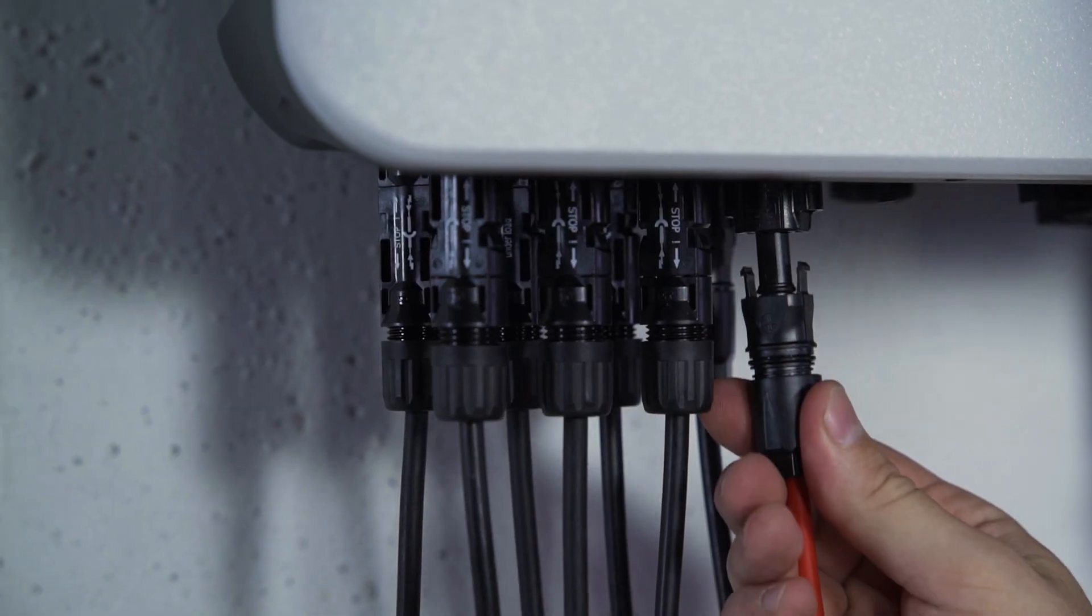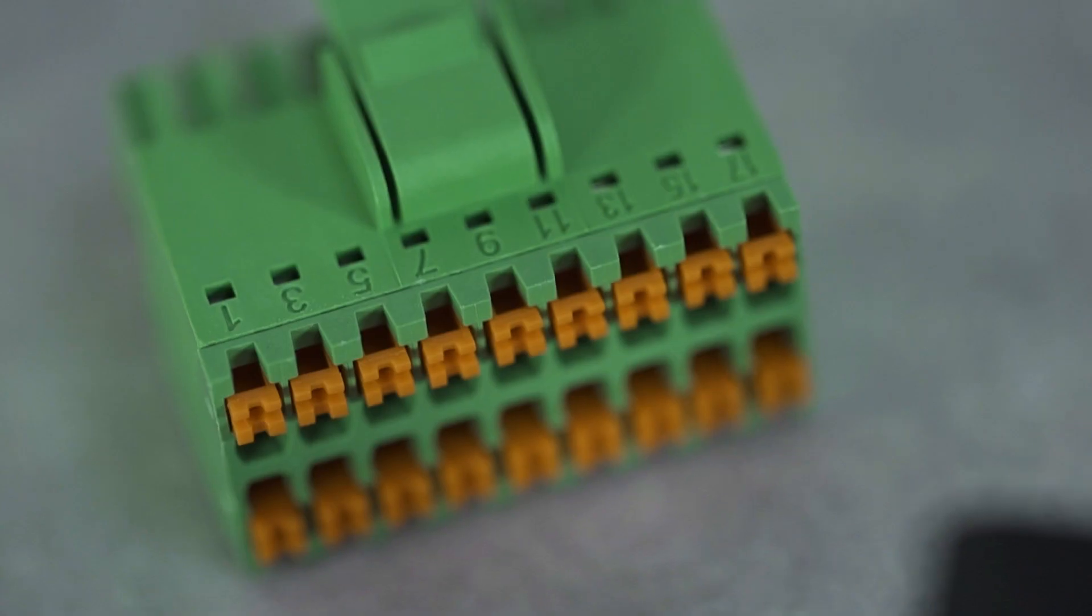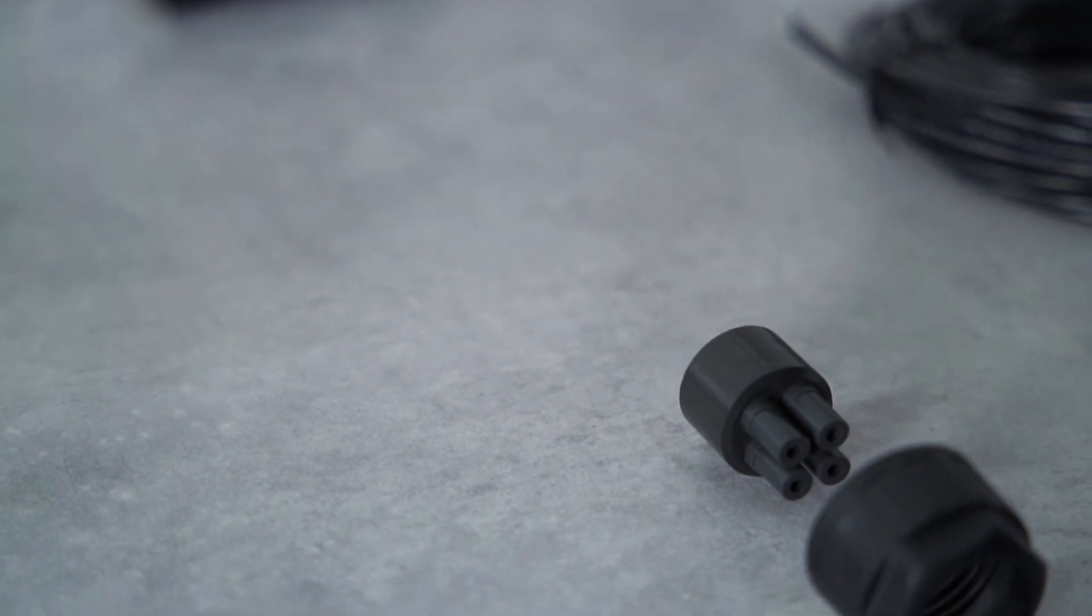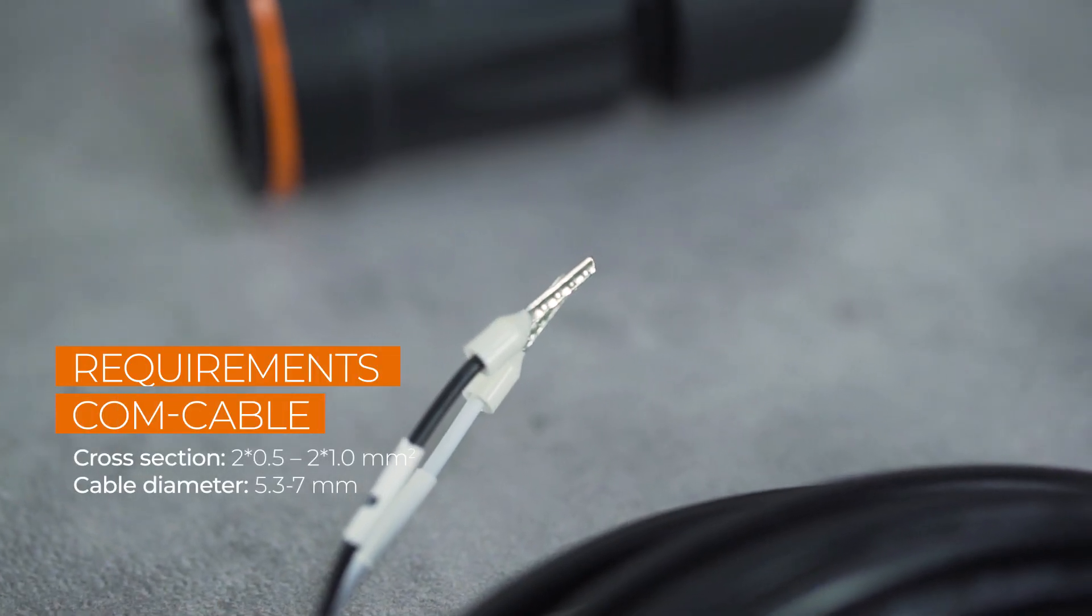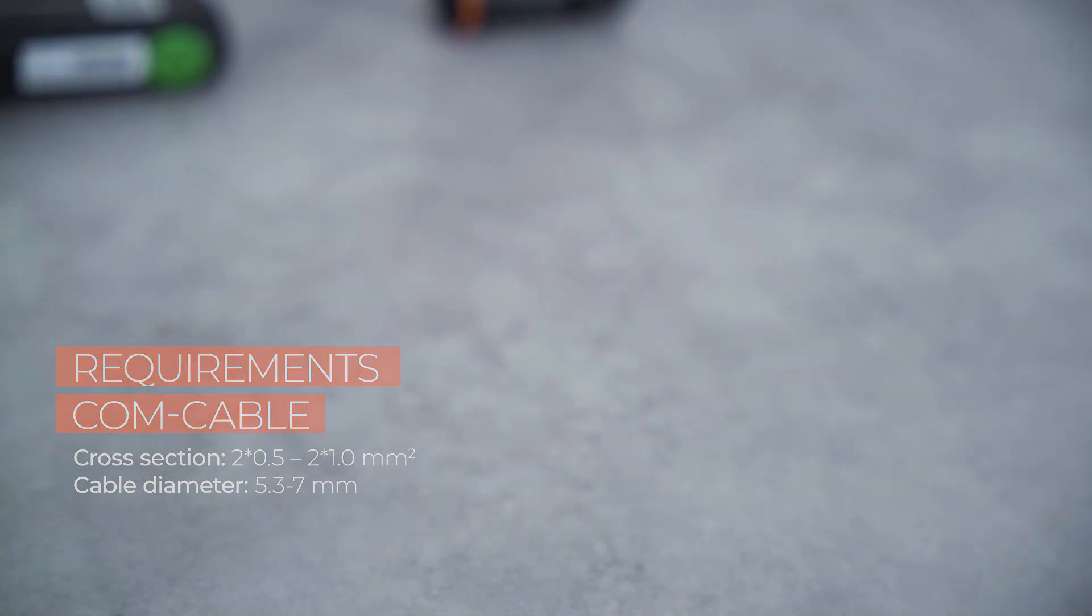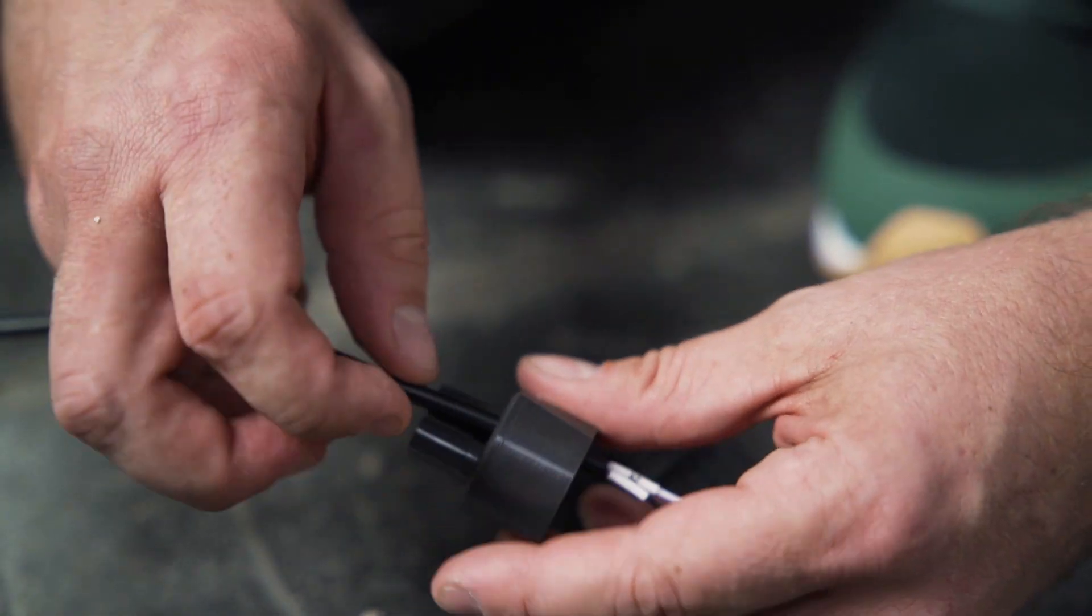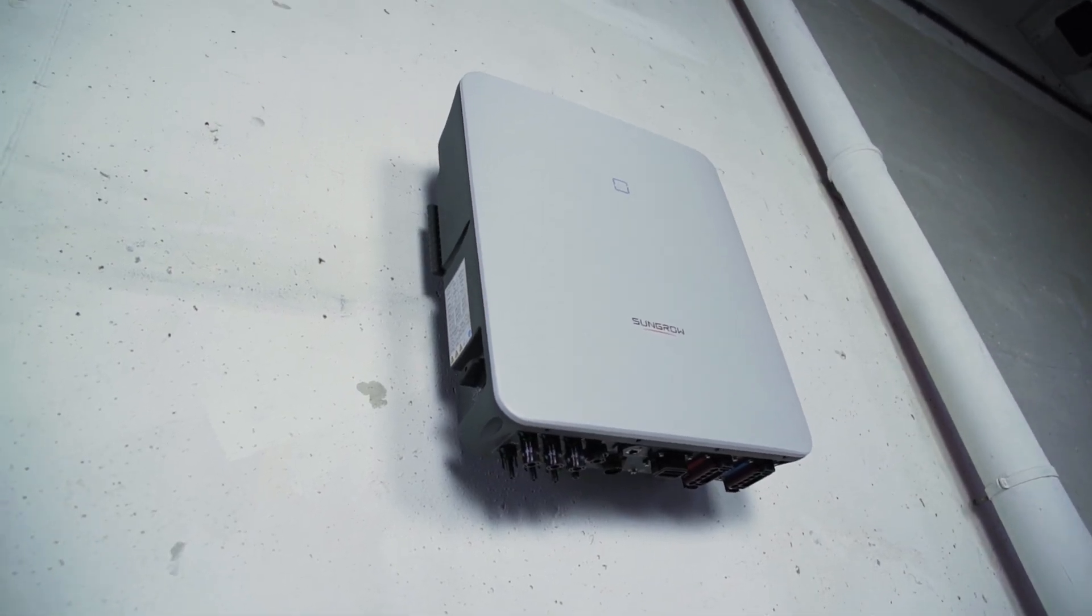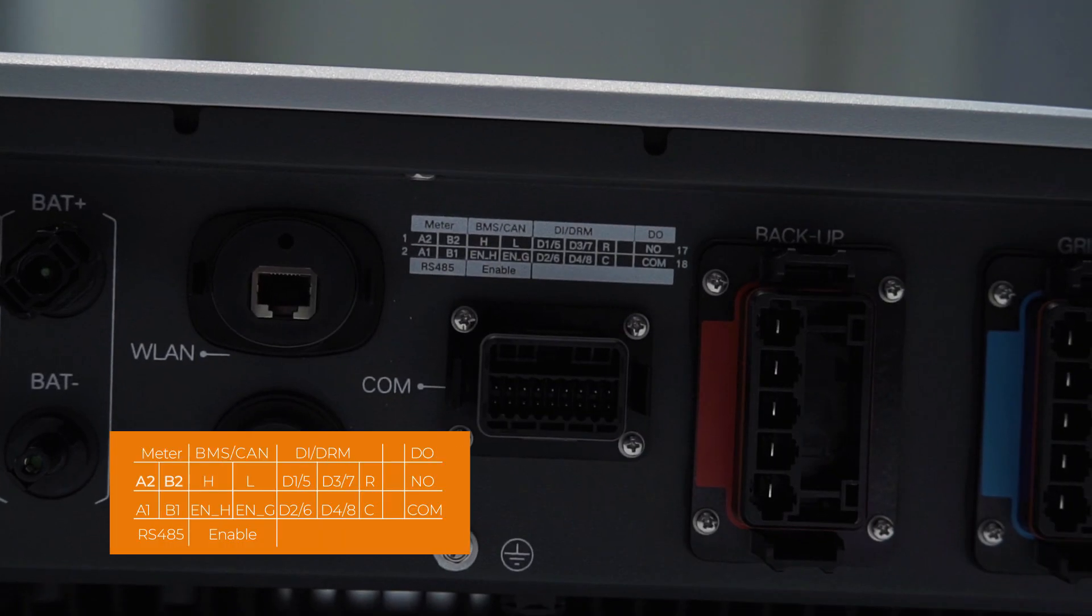Now only the communication plug is missing. The smart meter, the battery, and the heat pump for example are controlled via the communication interfaces. Remove approximately four to five centimeters of the cable sheath of the communication cables, then strip approximately five to seven millimeters of the inner cables. If necessary, you may have to fit the cables with end sleeves before you push them into the plug. At the bottom of the inverter above the connector for the communication plug, you will find a table with information about which cable has to be plugged into which port.